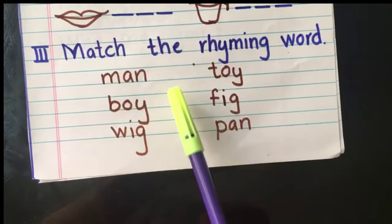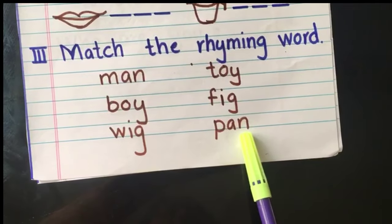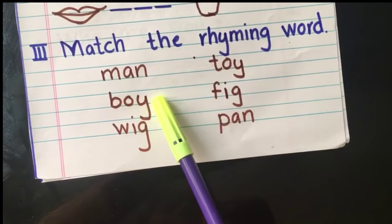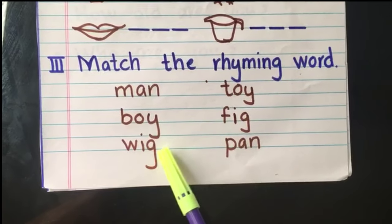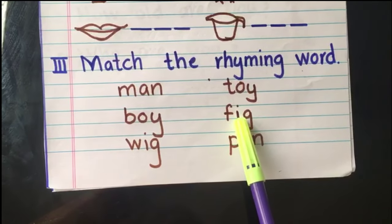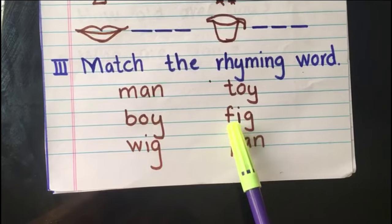Man and pan. The sound ends with an sound. So ask your child to match that rhyming word. For example, boy and toy, wig and fig. Like this.